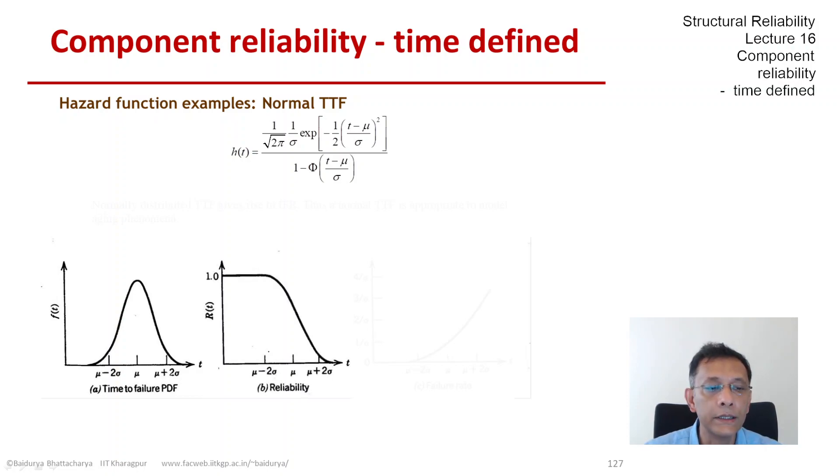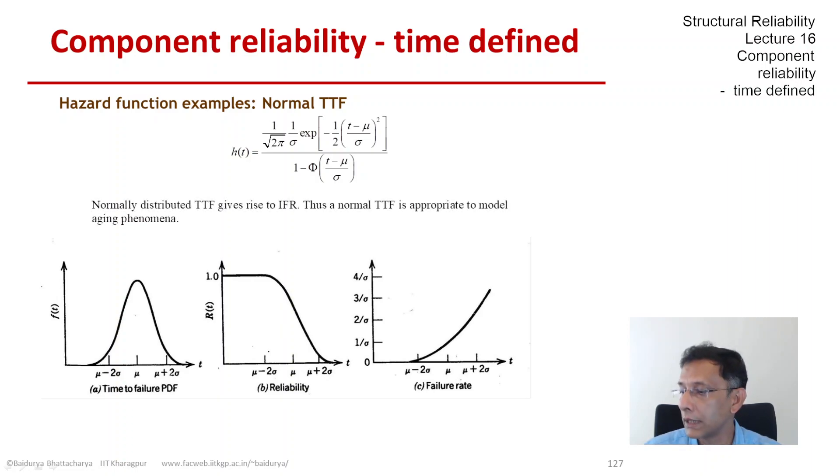Now, this is the reliability function falling from 1 to 0. And then the hazard function is actually increasing in nature. So for a normally distributed time to failure, we have an increasing failure rate and increasing hazard function.